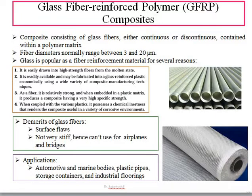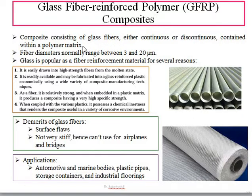Coming to the first example, glass fiber reinforced polymer, also known as GFRP composites. These composites consist of glass fibers, which can be continuous or discontinuous, dispersed inside a polymer matrix. The fiber diameter normally ranges between 3 to 20 micrometers. Lesser the diameter, more effective the composite will be, though the cost will also increase.